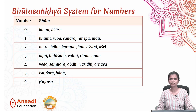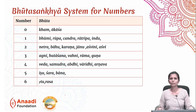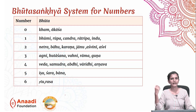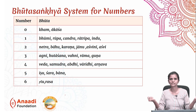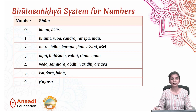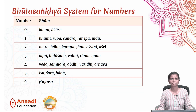Then we have Netra, which means eyes — we have two eyes. Bahu means hands — we have two hands. Karana means ears — we have two ears. Janu means knees — we have two knees.